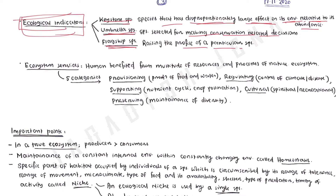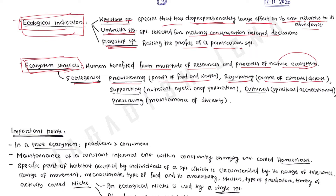What is ecosystem service? Humans benefit from a multitude of resources and processes of nature. Based on these benefits, there are five categories of ecosystem services: provisioning — like production of food and water; regulating — control of climate and disease; supporting — like nutrient cycle and crop pollination; cultural — like spiritual and recreational; and preserving — maintenance of diversity. These are the five categories of ecosystem services we get from nature.